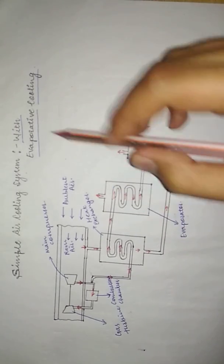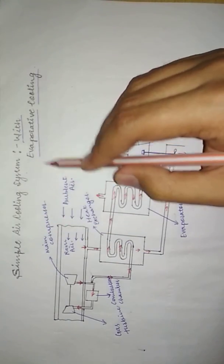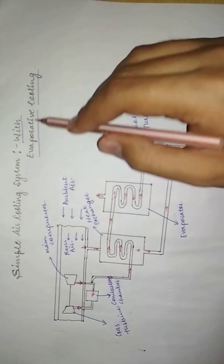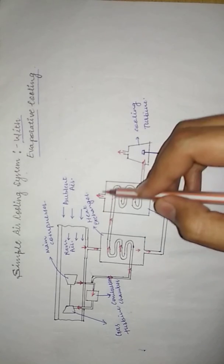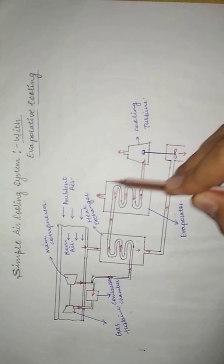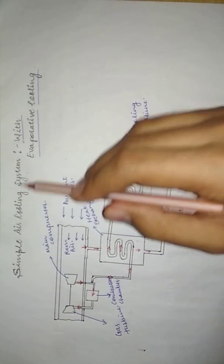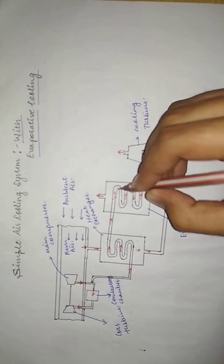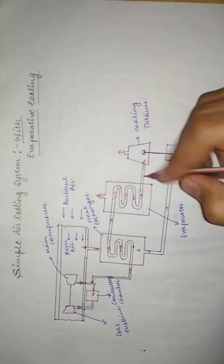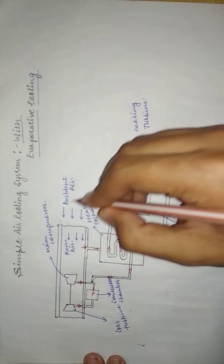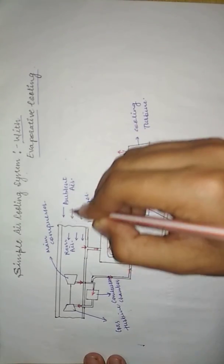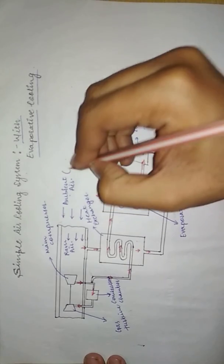This is the arrangement of the simple air cooling system with evaporative cooling. What we have already seen in the simple air cooling system is that it consisted of only the basic portions — the evaporator was not present. In this system, we have added an evaporator. Now, what is the working of the system?